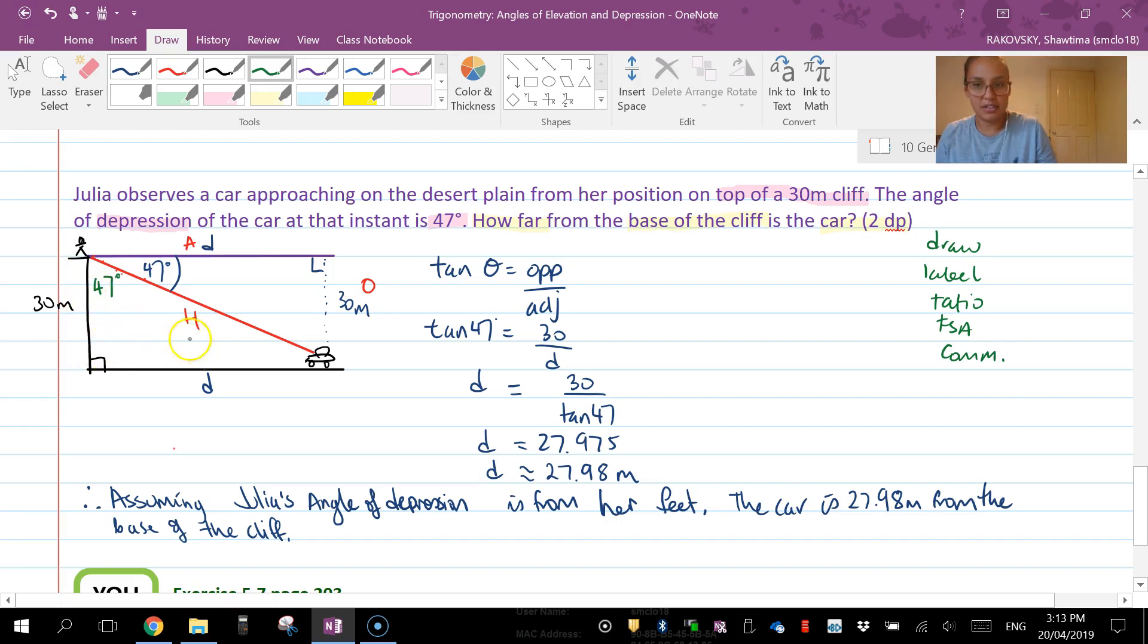Now a common error is someone will put the 47 here, and because that's the triangle that you're working with. Once you do that, if you actually have a look, that changes your ratio. It's still a tan question because we're still looking at the appropriate sides, but this becomes tan 47 equals D over 30.